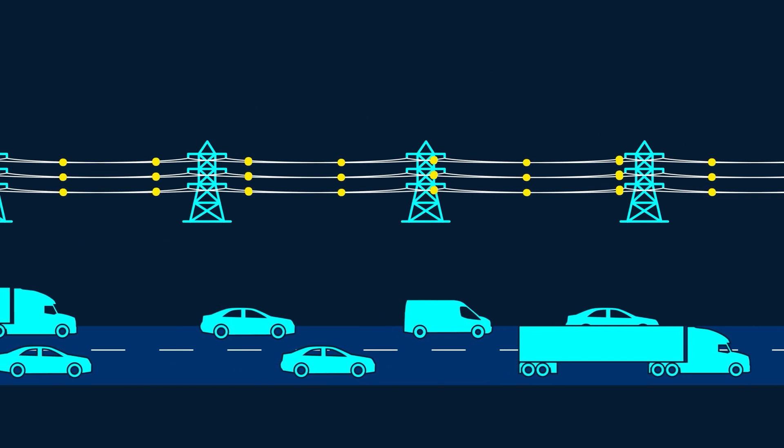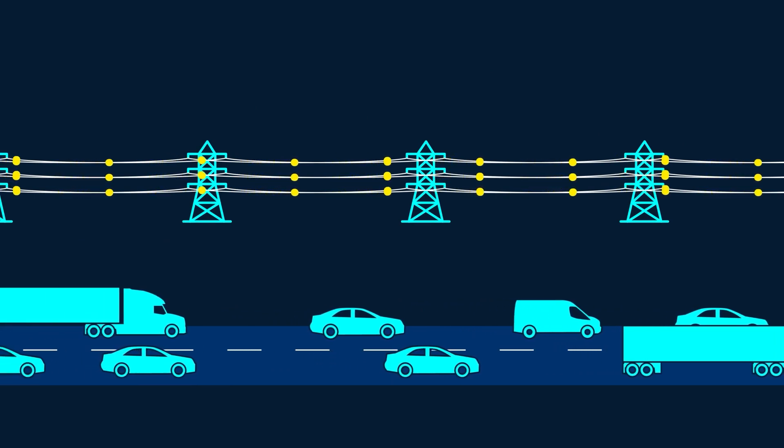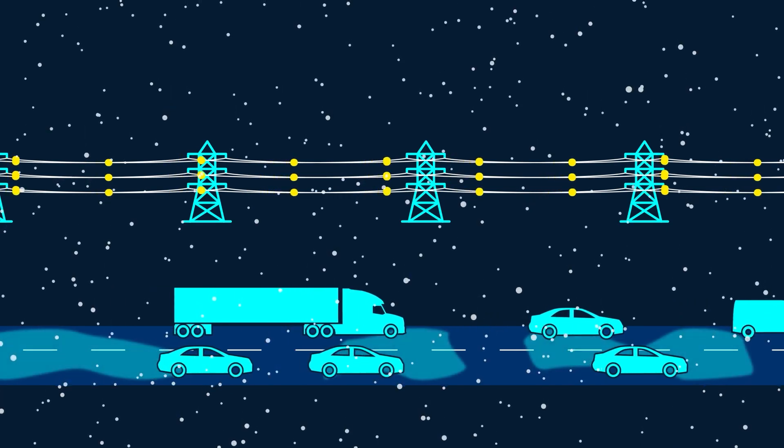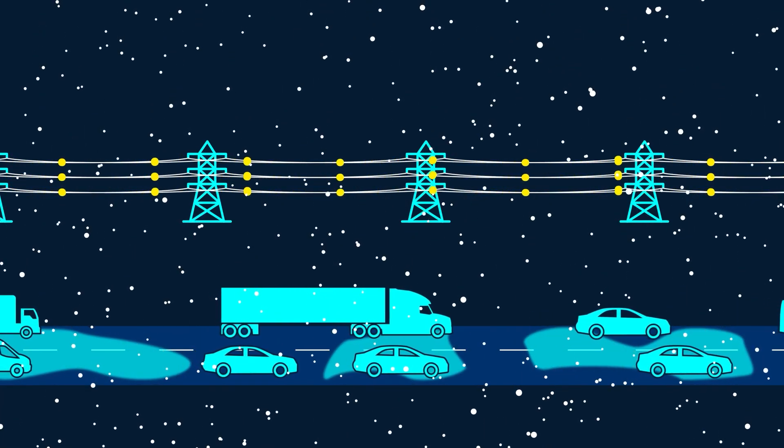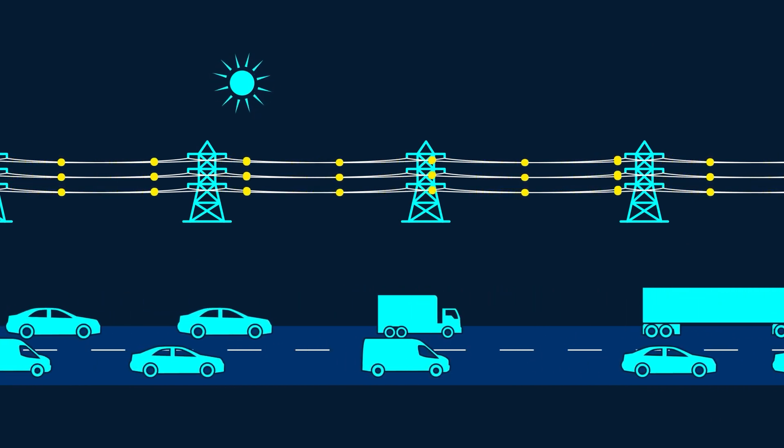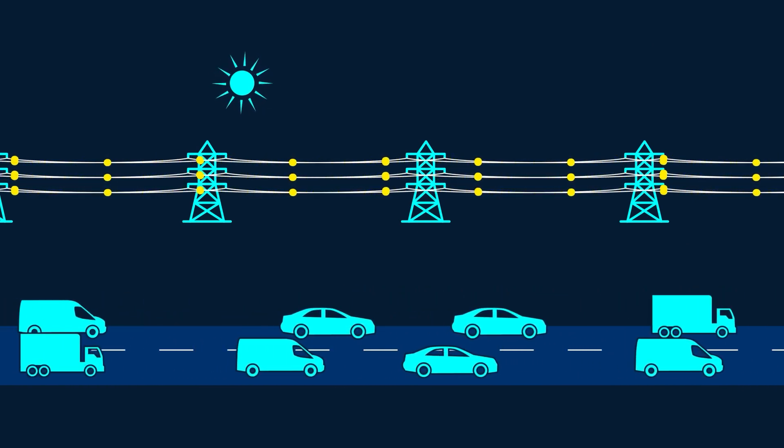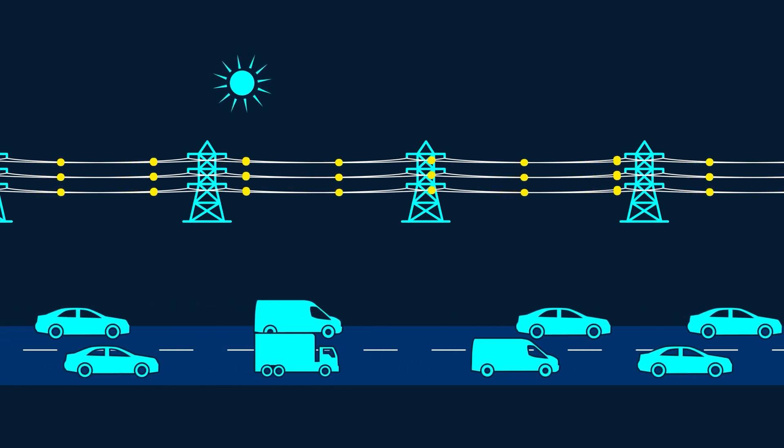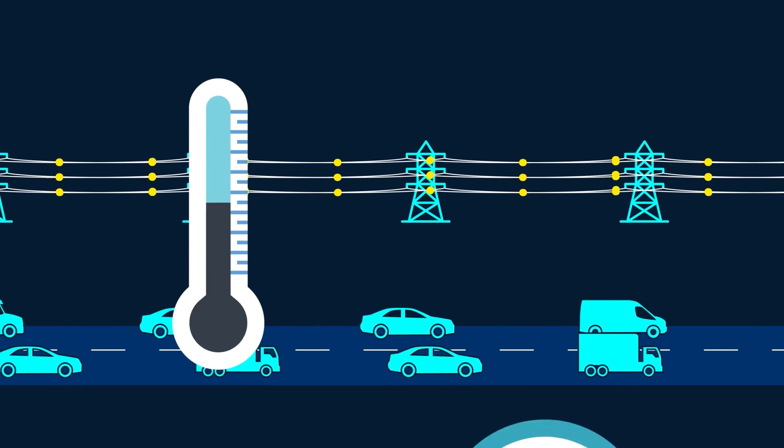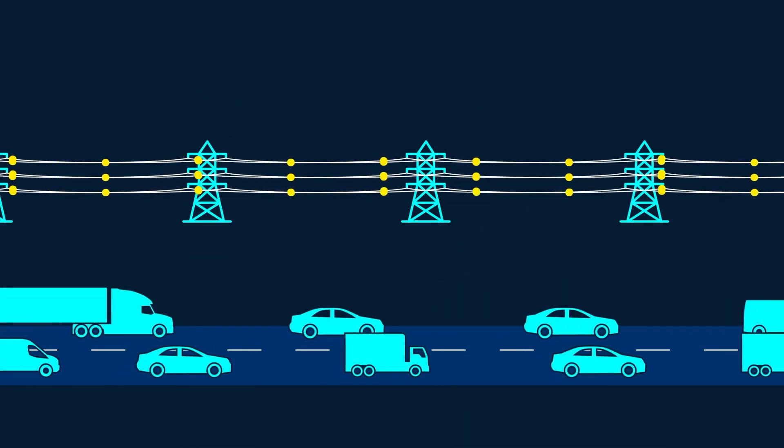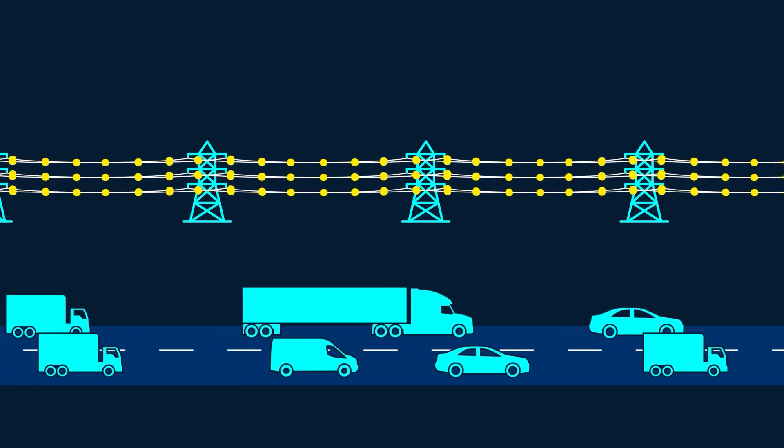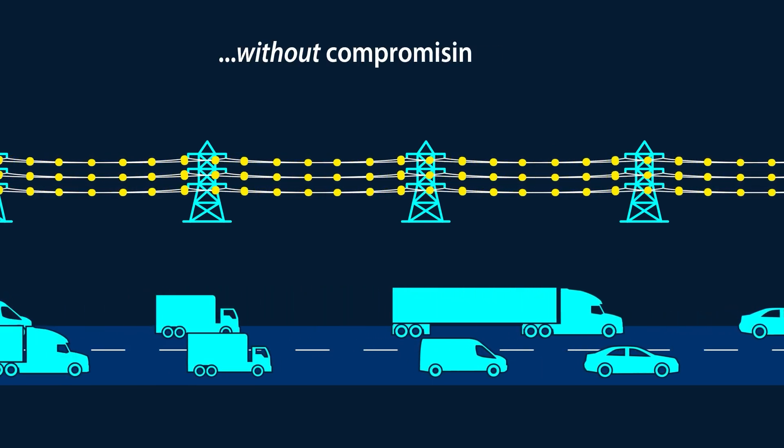Dynamic line ratings are like adjustments to driving speeds based on road conditions. Just as drivers slow down in snowy or icy weather and speed up in dry or sunny weather, system operators use dynamic line ratings to adjust transmission capacity based on real-time factors like temperature and wind speed. Dynamic line ratings enable more power on transmission lines when conditions allow, without compromising safety.